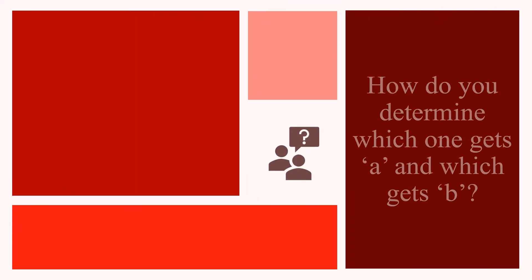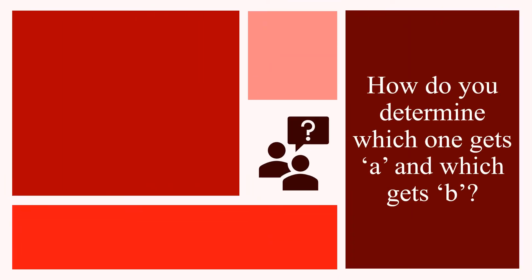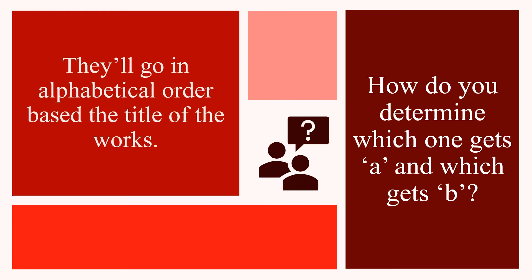The question is: how do you determine which source gets the A and which source gets the B? The answer is they'll go in alphabetical order according to the title of the works.